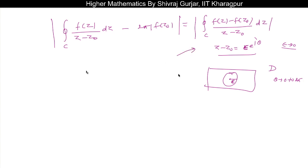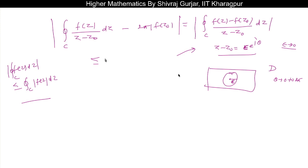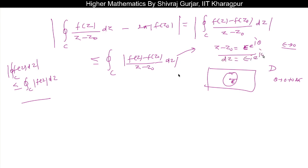Replacing the parameterization, this expression is less than the modulus of the integral of |f(z) minus f(z₀)|/|z minus z₀| dz. We know the modulus bound: the integral along a closed curve is less than the integral of |f(z)| dz. So this is less than the integral of |f(z) minus f(z₀)|/|z minus z₀| dz, and substituting dz = iε·e^(iθ) dθ gives us the bound.